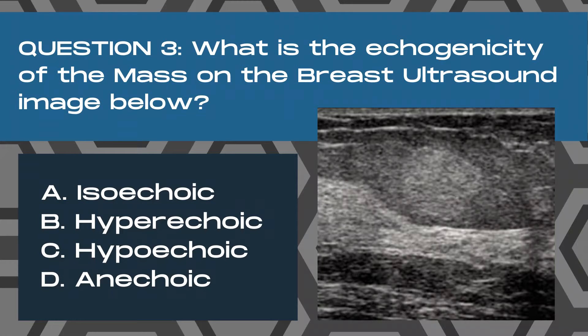Question 3. What is the echogenicity of the mass on the breast ultrasound image below? A. Isoechoic, B. Hypoechoic, C. Hypoechoic, or D. Anechoic.